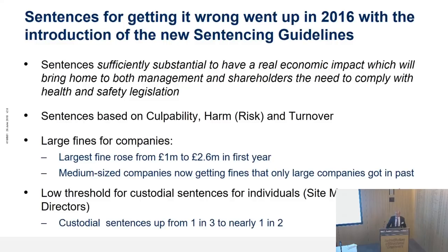In the first year of the sentencing guidelines, there was a notable increase in fines. The largest fine rose from £1 million the year before to £2.6 million in the first year. Medium-sized companies were now getting fines that only larger companies were getting in the past, typically those in the hundreds of thousands. The other significant change was a lower threshold for custodial sentences — either immediate jail sentences or suspended prison sentences — and that typically affects contractors, site managers, and directors. In the first year, one in two of those found guilty were getting a custodial sentence, compared to one in three the year before.